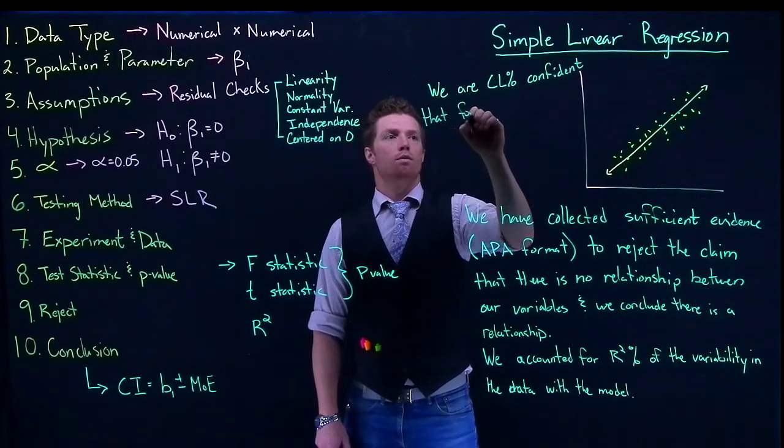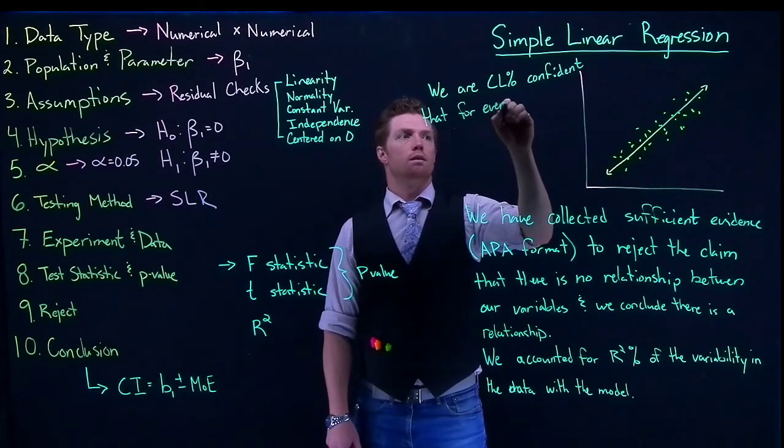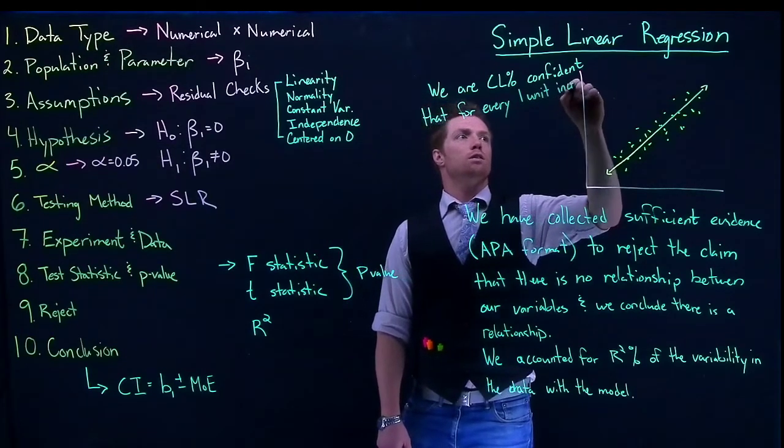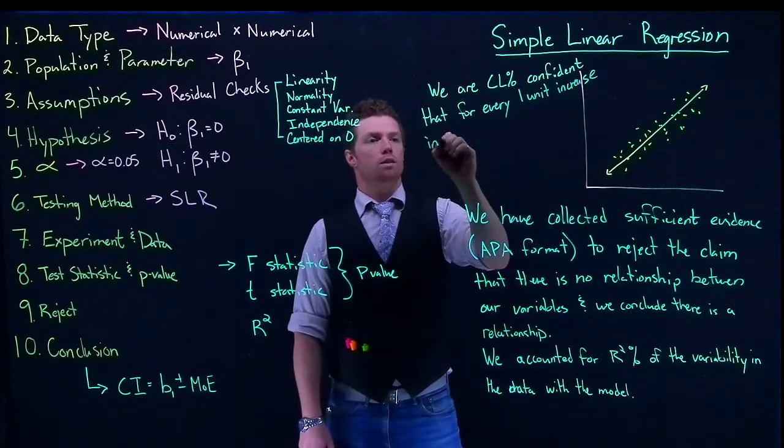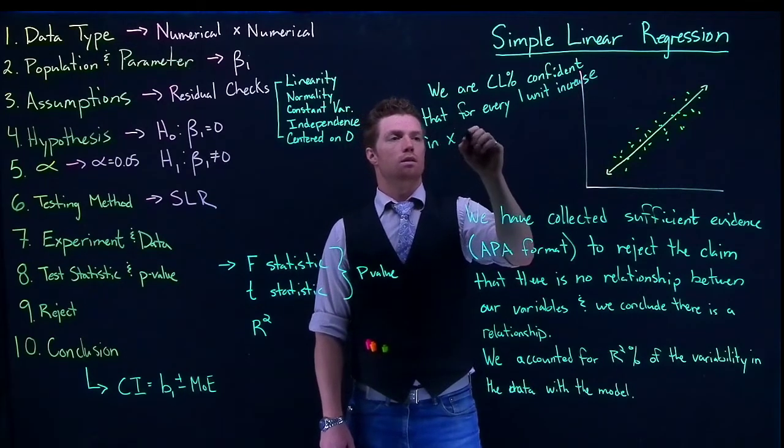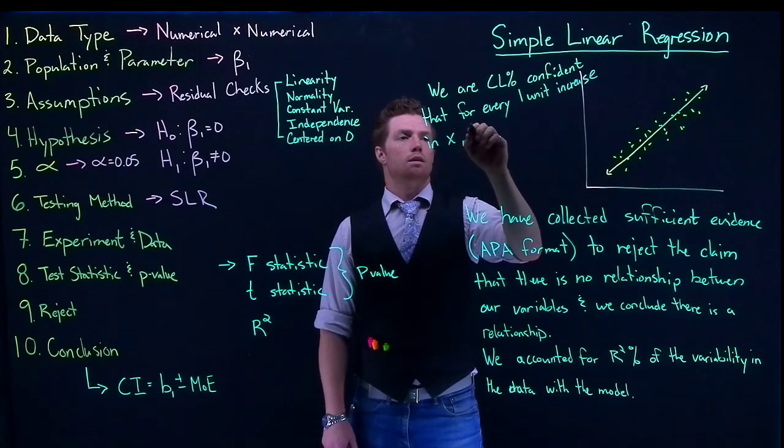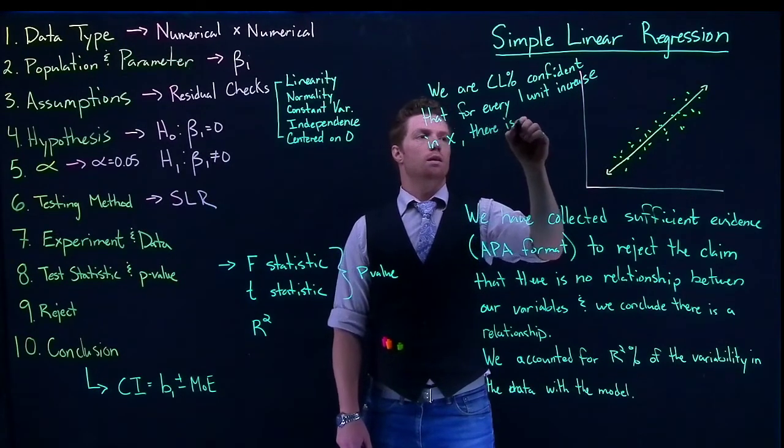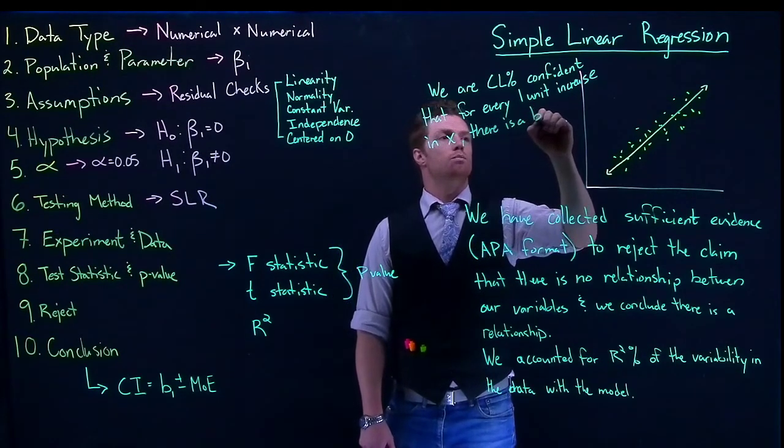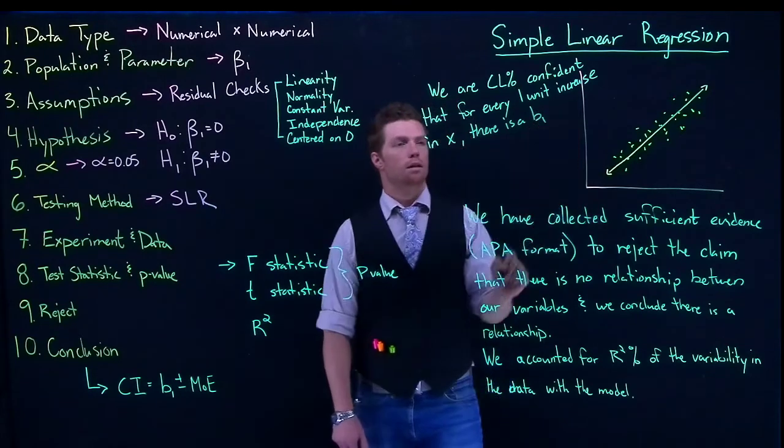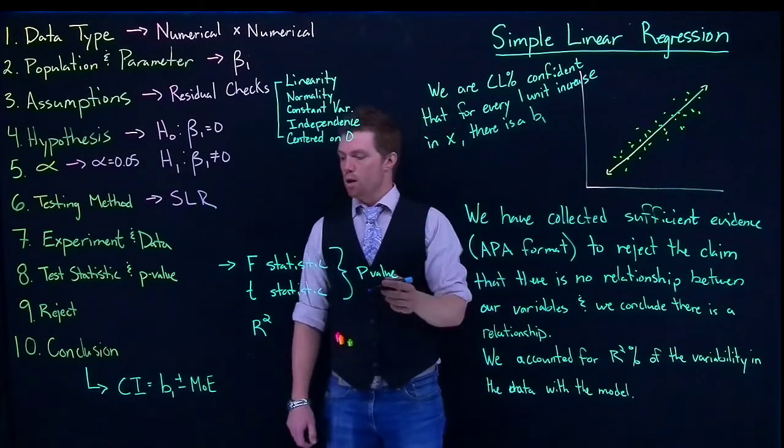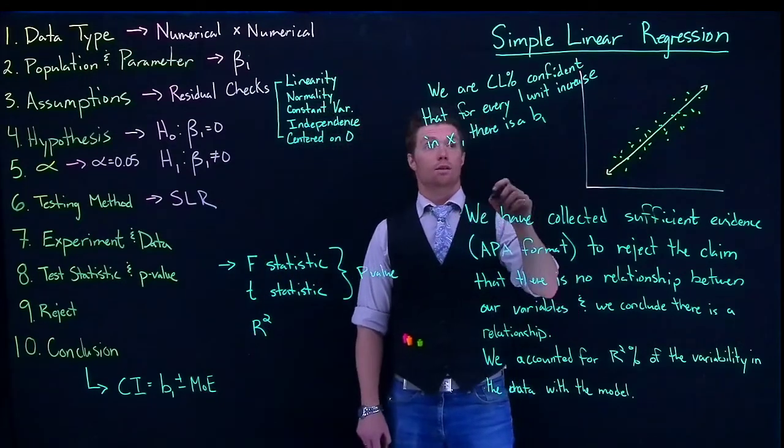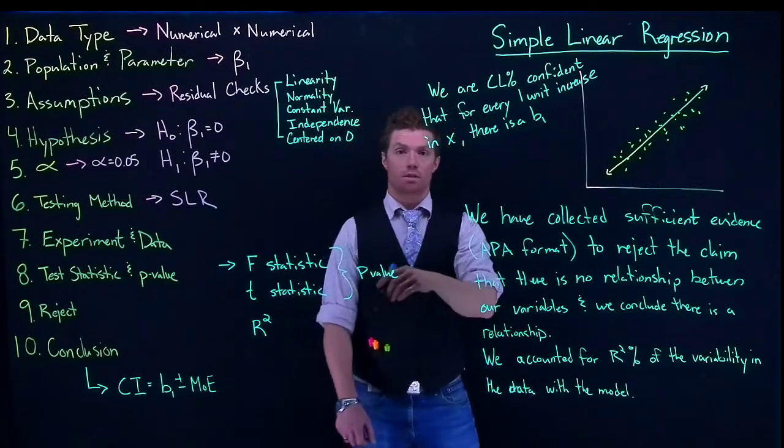That for every one unit increase in X, there is a b1. Now, we could say a b1 plus or minus the margin of error, or we could say that there is between whatever confidence interval is.